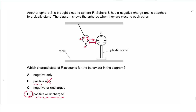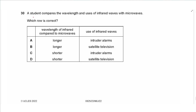Question 30: Comparing infrared waves and microwaves — infrared has a shorter wavelength than microwaves. Infrared is used for intruder alarms since it detects heat emitted by a person. Satellite television uses microwaves, not infrared. The answer is C.